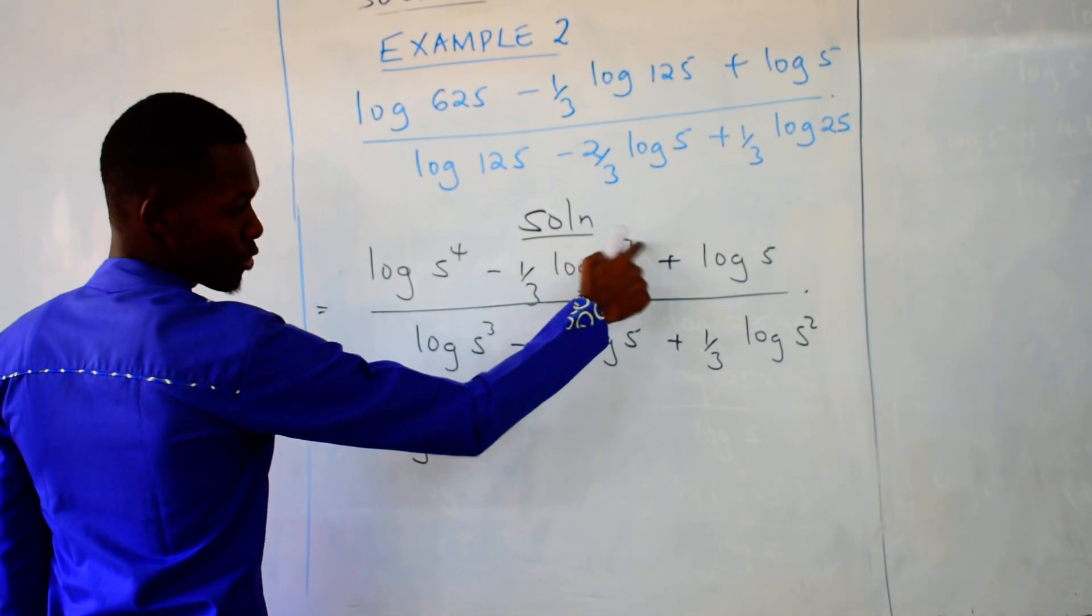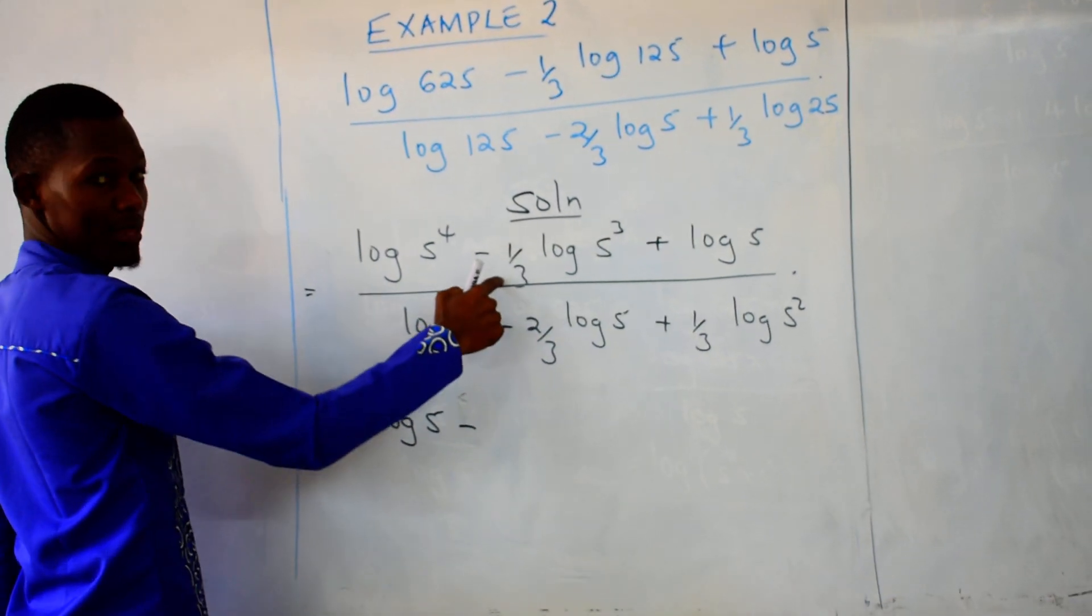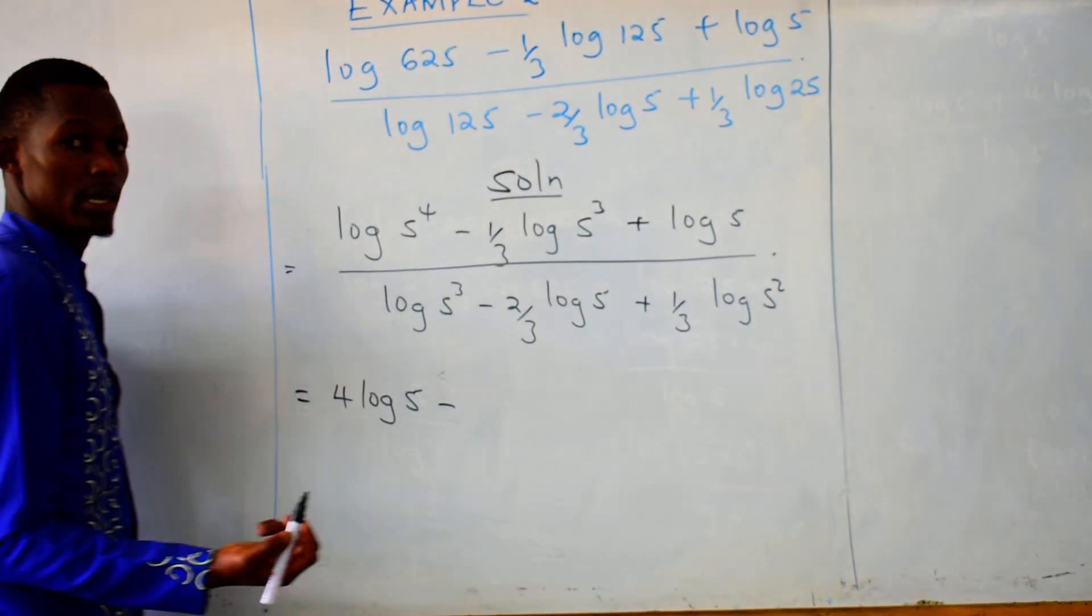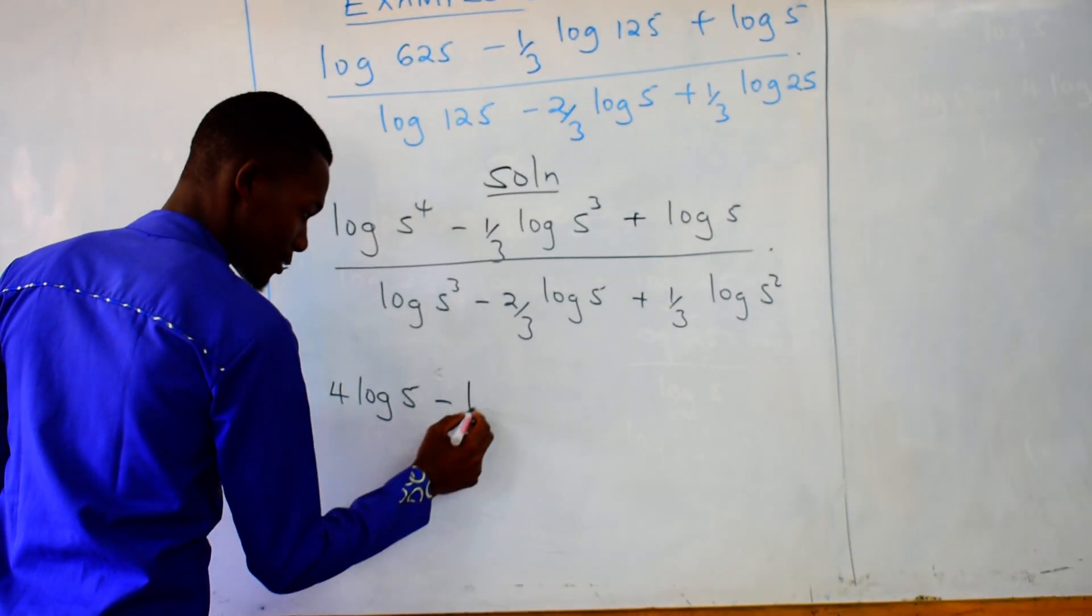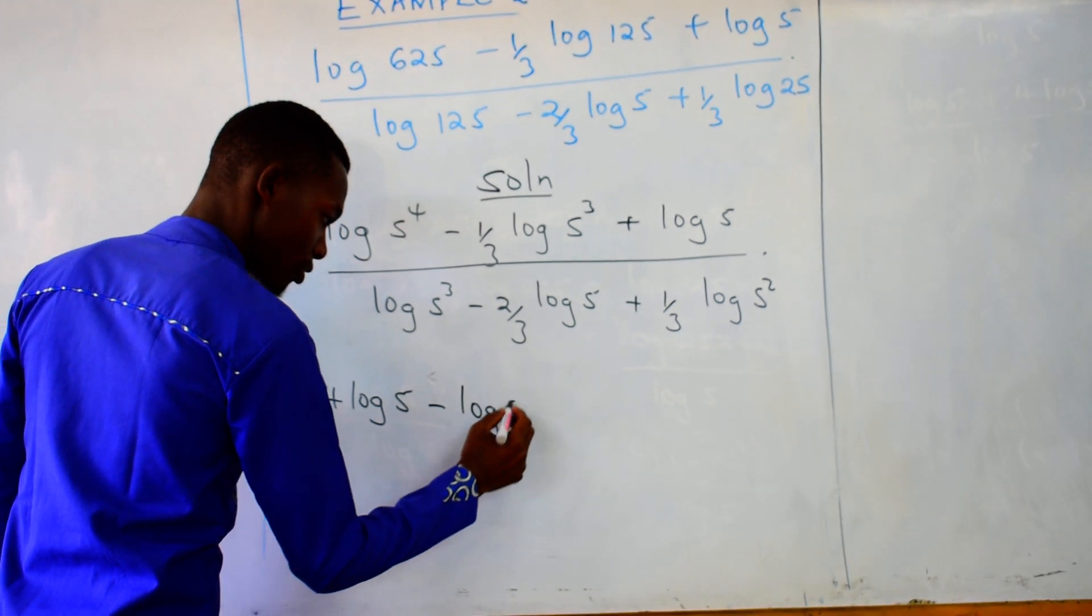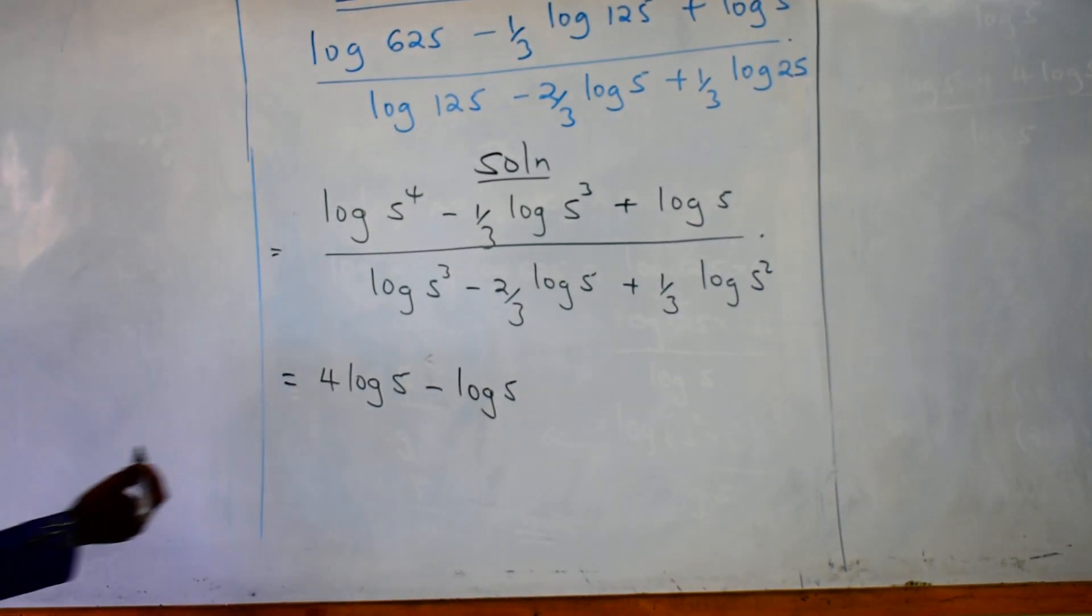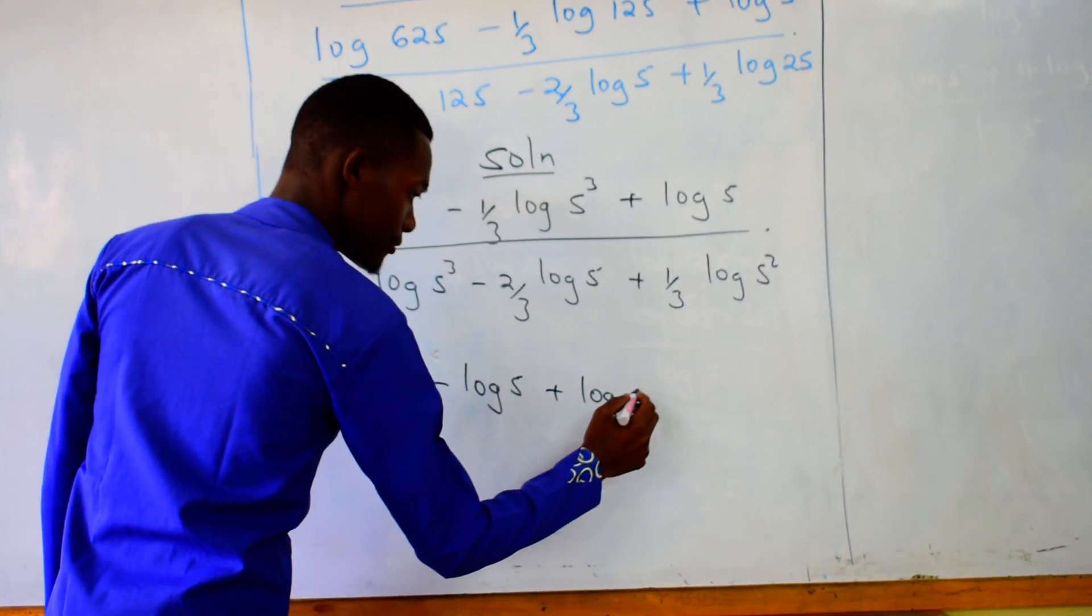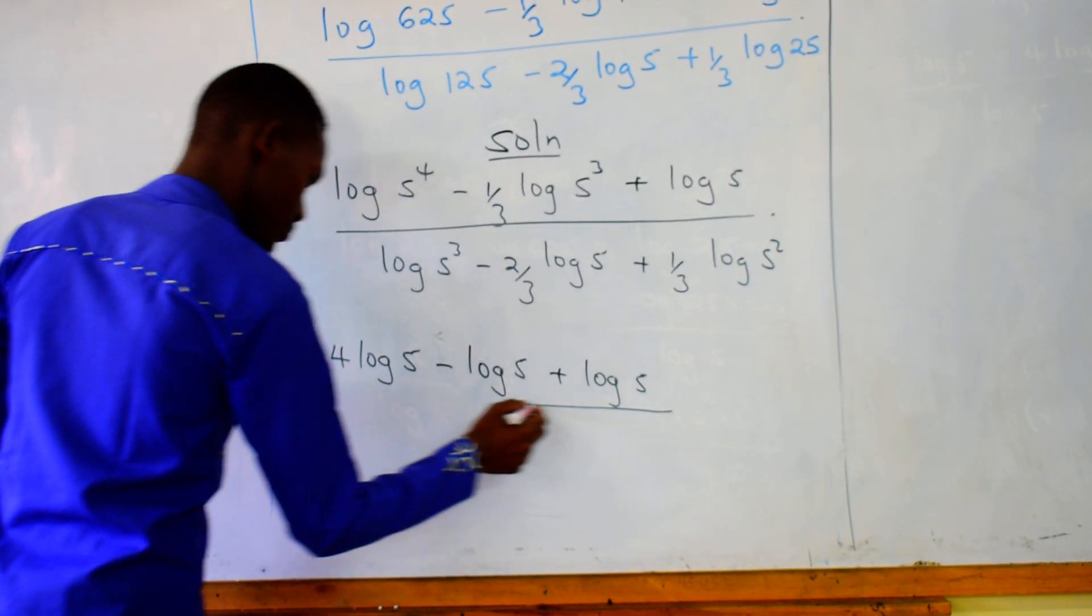Now you drop 3 here, and you have a third, they will cancel out. So you have minus 1, you don't really need to write the 1, you just have minus log of 5, then plus the log of 5. So that is the numerator.